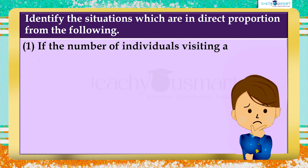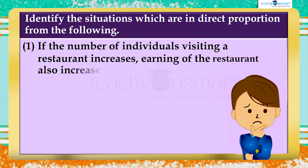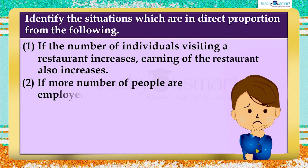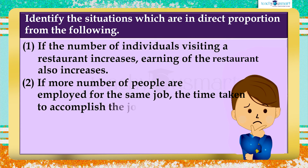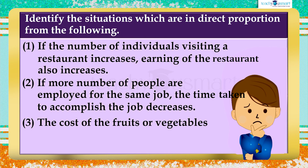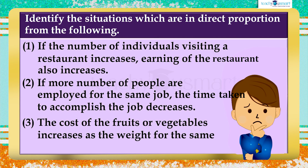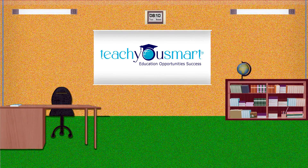First: if the number of individuals visiting a restaurant increases, the earning of the restaurant also increases. Second: if more people are employed for the same job, the time taken to accomplish the job decreases. Third: the cost of fruits or vegetables increases as the weight increases. That's all for now — see you all in the next class.